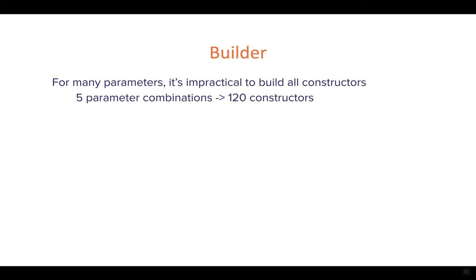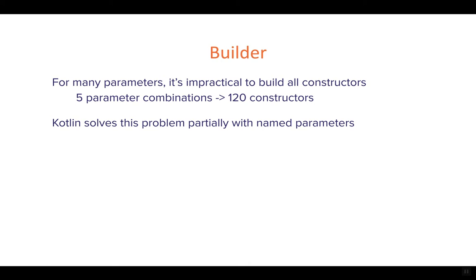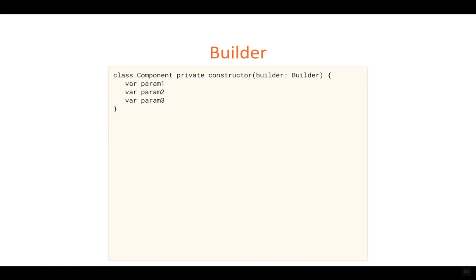Kotlin does solve this problem partially with named parameters — you can pass them by name without needing all the constructors. However, the problem is that this doesn't really work with Java code. Since Kotlin runs on the JVM, if you're working with any software written in Java, you won't be able to use named parameters. The Builder pattern is very useful here because it allows us to bypass named parameters and build our class with optional parameters.